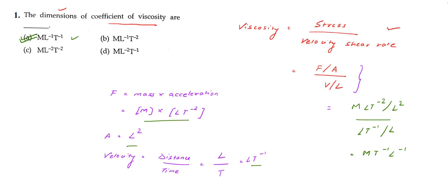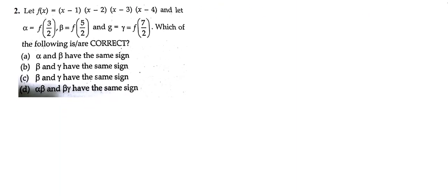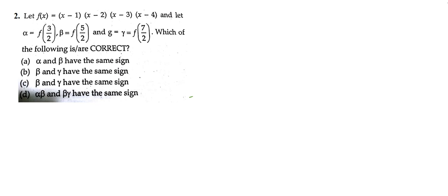Question 2 says: function f(x) = (x−1)(x−2)(x−3)(x−4). We have been given that alpha = f(3/2), beta = f(5/2), and gamma = f(7/2). So here we have three values of x and we need to evaluate the function at each.